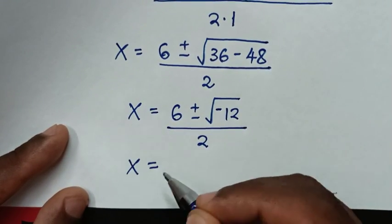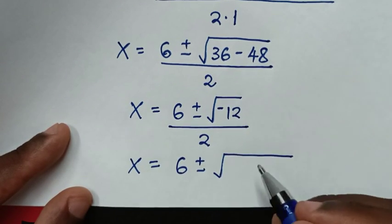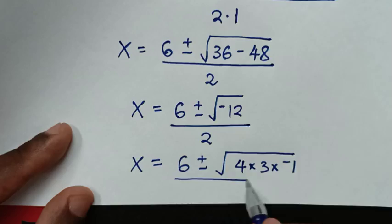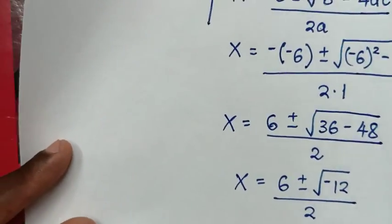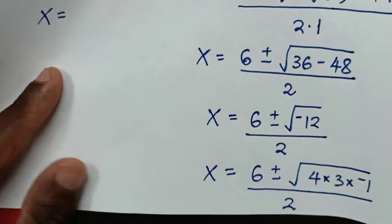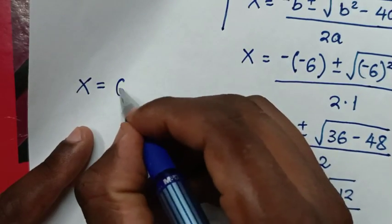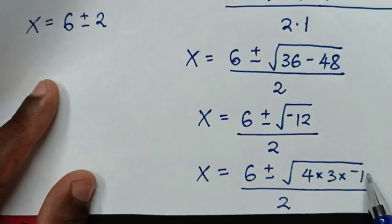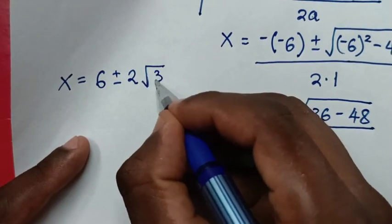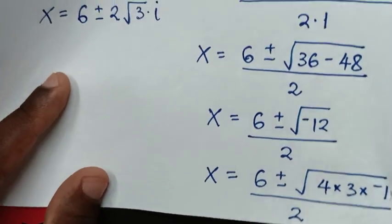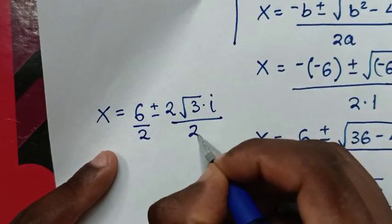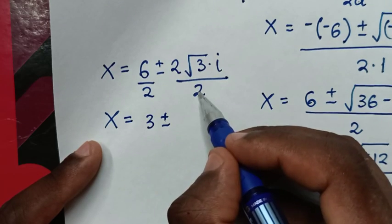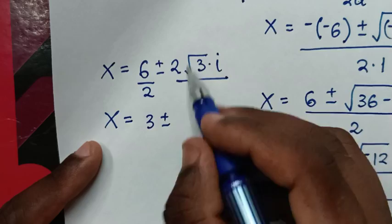Now √(-12) = √(4 × 3 × -1) = 2√3 · i. So x = (6 ± 2√3 i) / 2. Dividing both terms by 2: 6/2 = 3, and 2/2 = 1, giving x = 3 ± √3 i.